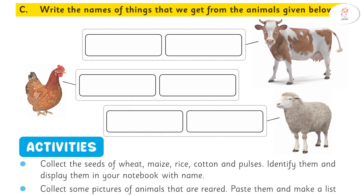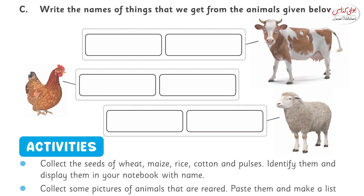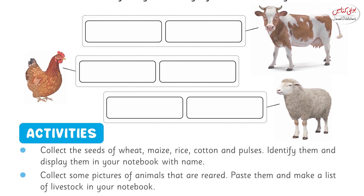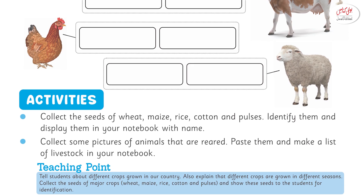Write the names of the things that we get from the animals given below. They have given you three pictures: number 1 is cow, number 2 is hen, and number 3 is sheep. What do we get from cow? We get milk and meat from cow. What do we get from hen? We get meat and eggs from hen. What do we get from sheep? The right answer is wool and meat.